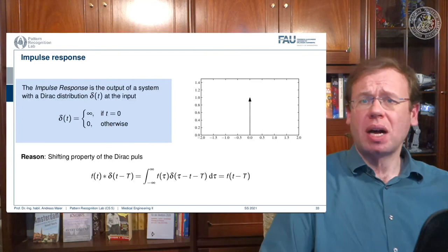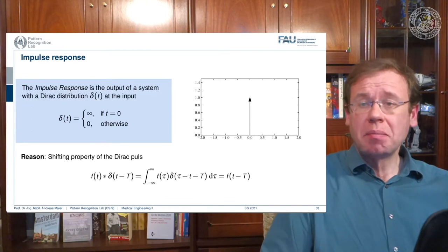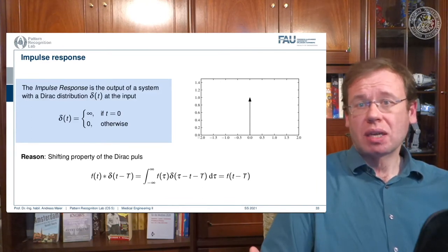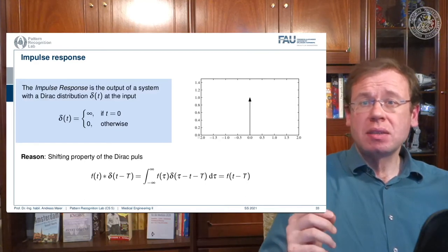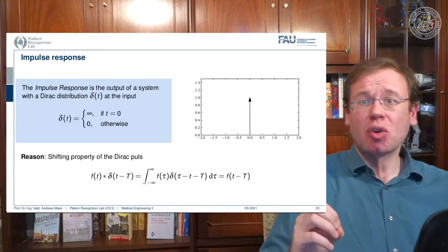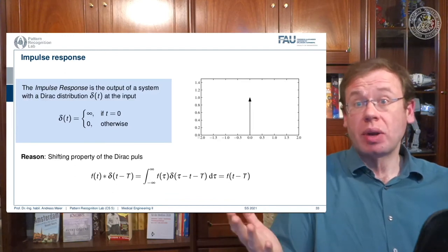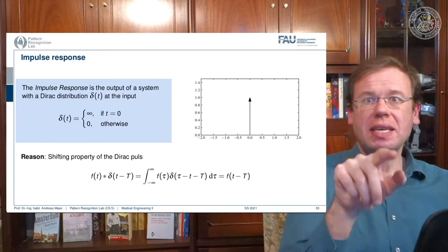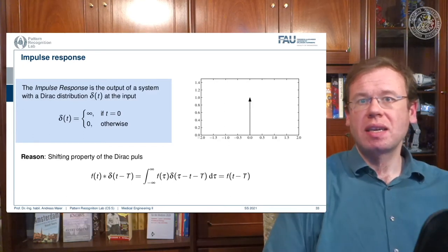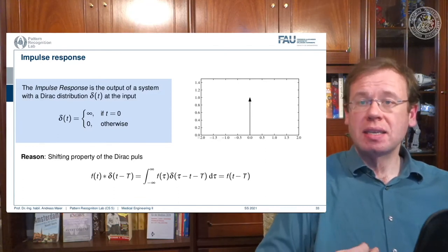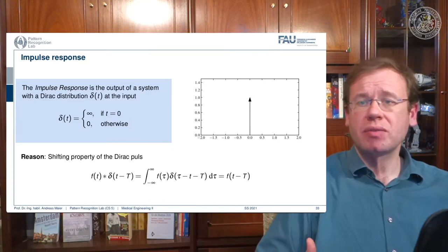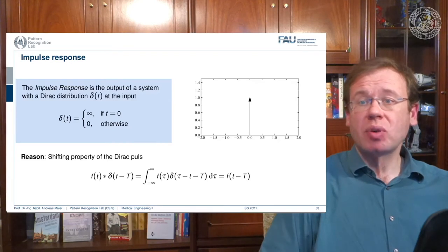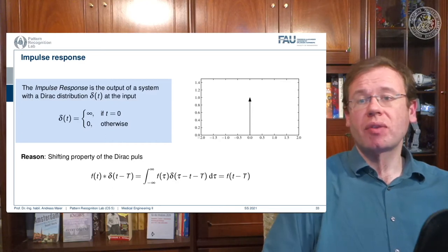What is the impulse response? An impulse, also called a Dirac distribution, is the neutral element for convolution. It is simply zero everywhere except at zero, where it's infinitely high — really just a peak, and then nothing else. This is the neutral element for convolution, so if I convolve with this impulse, I get exactly the original function. This is called the shifting property of the Dirac pulse: if I shift it by some variable t, I will get exactly f shifted by t when I convolve with this Dirac impulse.